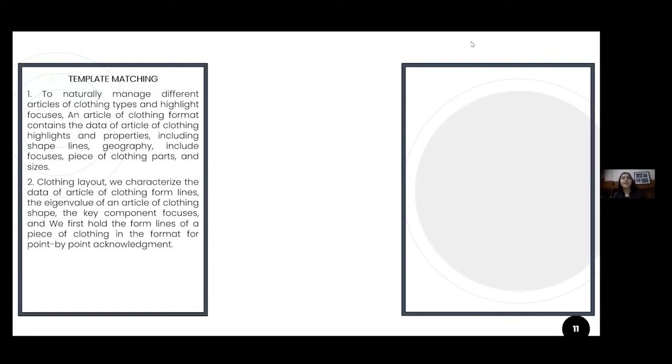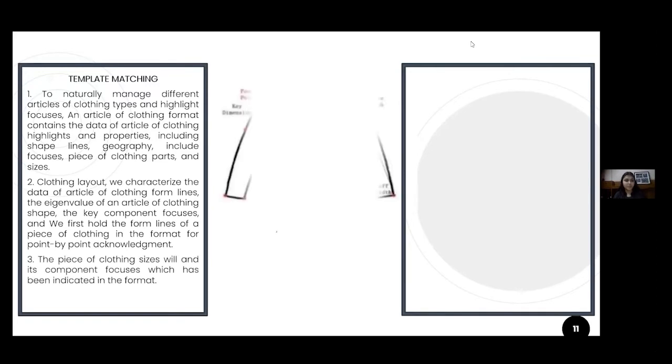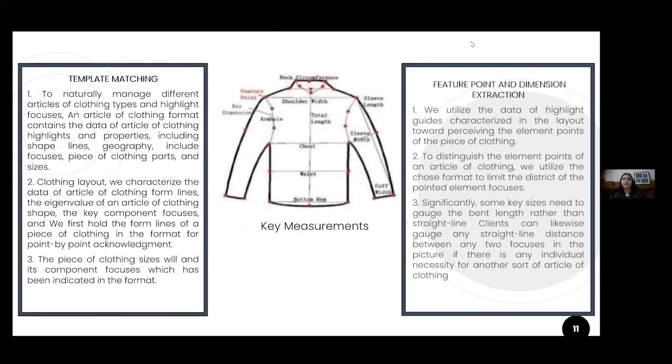We then move on to the second step, which is the feature dimension extraction. To identify the feature points of a garment, we use the selected template to narrow down the region of aimed feature points. A regular area centered at the feature point is the region where the potential feature point is located.